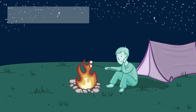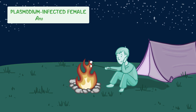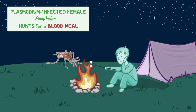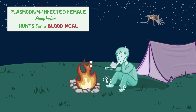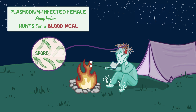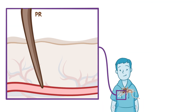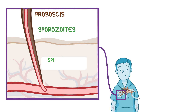Malaria is transmitted when a plasmodium-infected female of the Anopheles mosquito hunts for a blood meal in the evening and throughout the night. They're kind of like tiny flying vampires, with the mosquito being drawn to carbon dioxide that gets breathed out, as well as bodily smells like foot odor. At this point, the plasmodium is in a stage of development called a sporozoite, waiting patiently in the mosquito's salivary gland. When a mosquito bites a person with its proboscis, the worm-like sporozoites spill out of the mosquito's saliva and make it into the bloodstream.